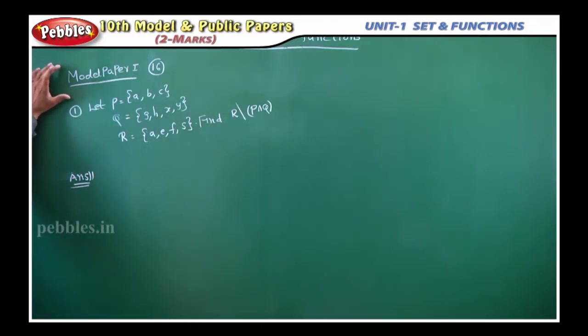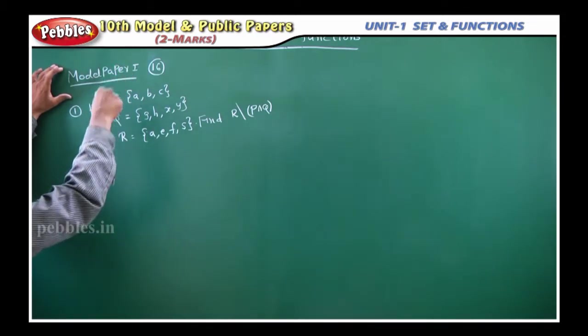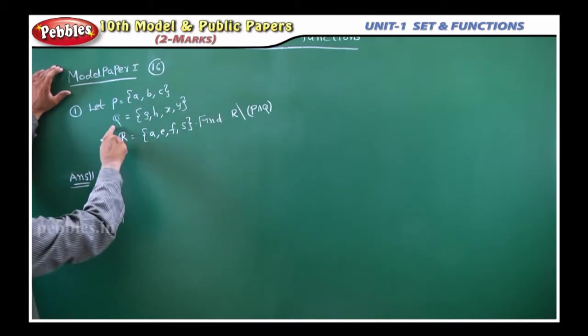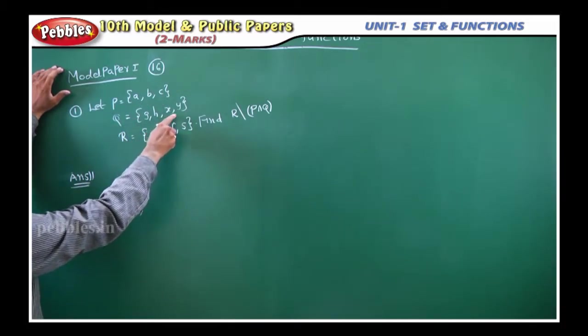Model paper 1, question number 16, and we are doing it as first question. Let P equals the set containing the elements A, B, C. Q equals the set containing the elements G, H, X, Y.